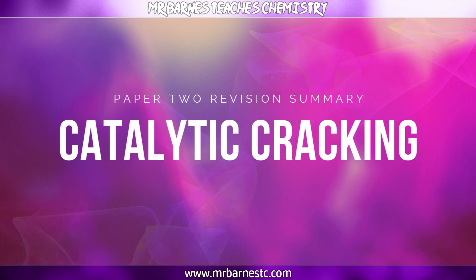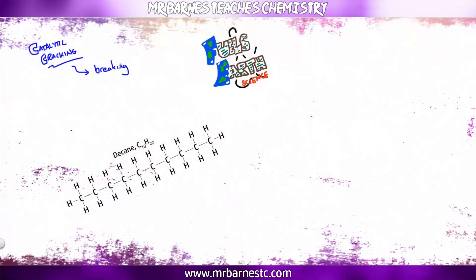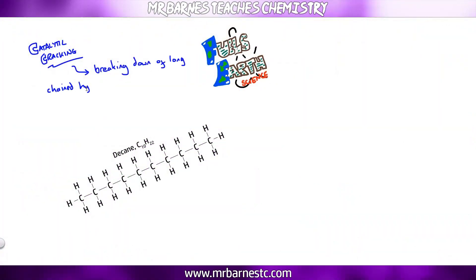The next section of this video is going to have a look at catalytic cracking, which is nice and simply breaking down of long-chained hydrocarbons into shorter-chained hydrocarbons. Why do we need to do that though? So let's have a look at my decane here, which has got the formula C10H22. Now we have a large amount, a large supply of our large-chained alkanes, our large-chained hydrocarbons, but we don't have as much demand for them. So we don't need them as much.